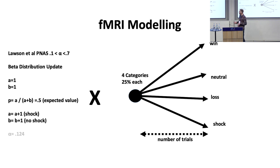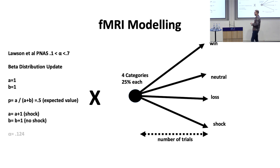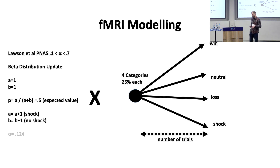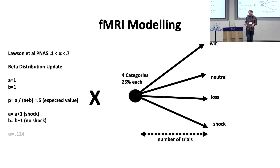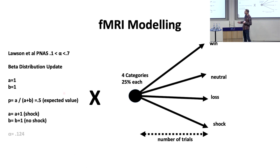We convolved this expected value signal with participants' perceptions of the valence of these shapes. Initially, participants would be completely indifferent between shape categories, with preference at 25% across the board. Through learning, they would come to understand that win shapes were most desirable and shock shapes most aversive. Our MRI regressor incorporated both elements, allowing us to scale expectations from most appetitive to most aversive.